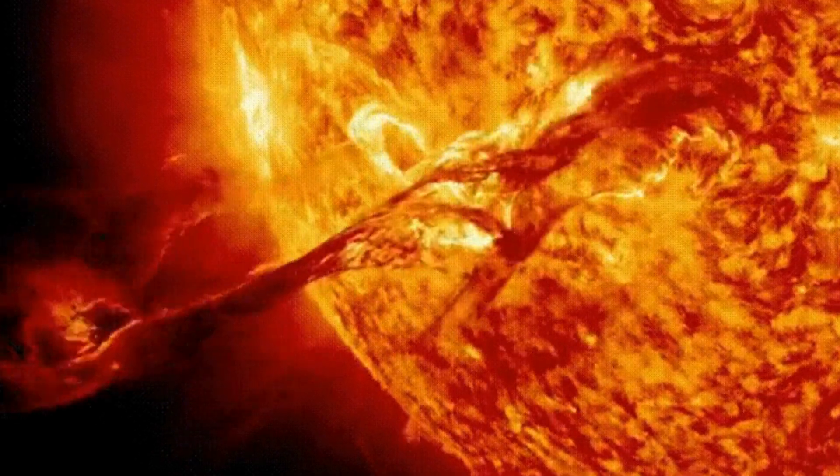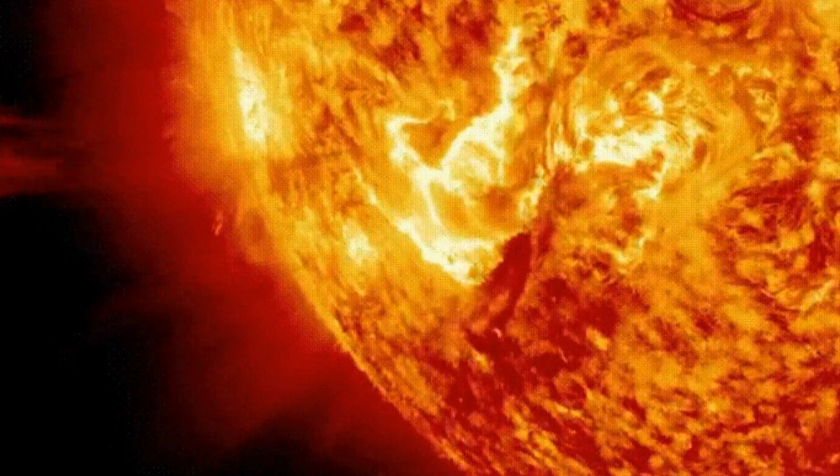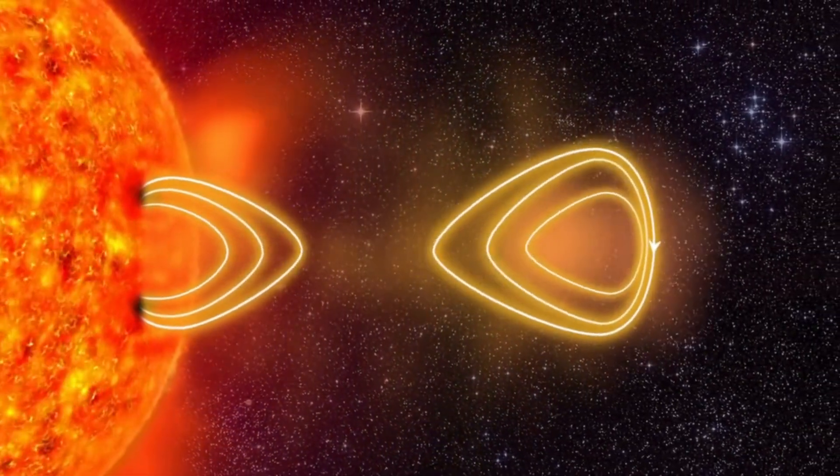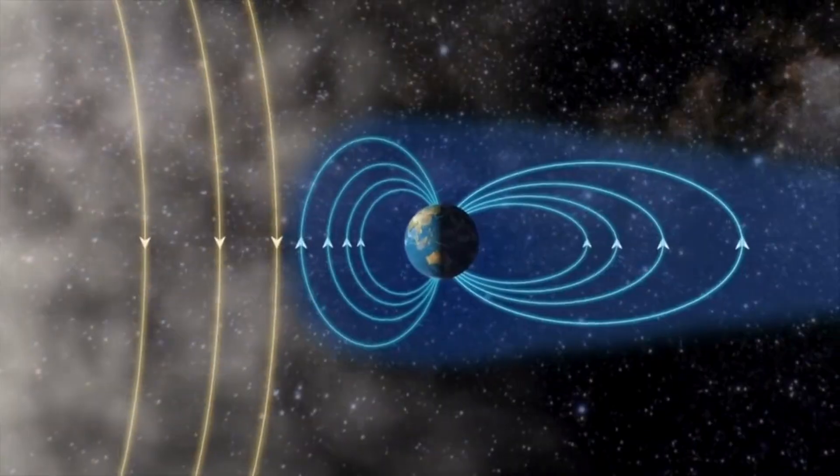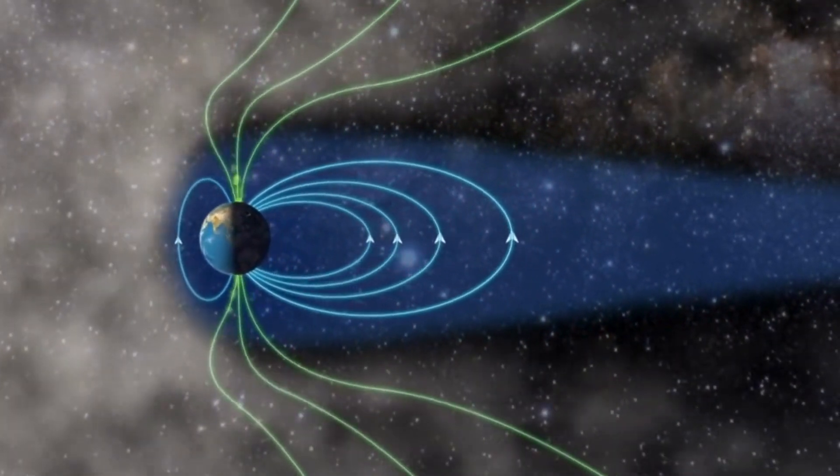This protects us against harmful radiation, which comes from particles from the Sun and cosmic rays from outside the solar system. While the magnetic field stops the radiation from reaching us, it hits the Earth's atmosphere, and we see it as the aurora, the northern or southern lights.